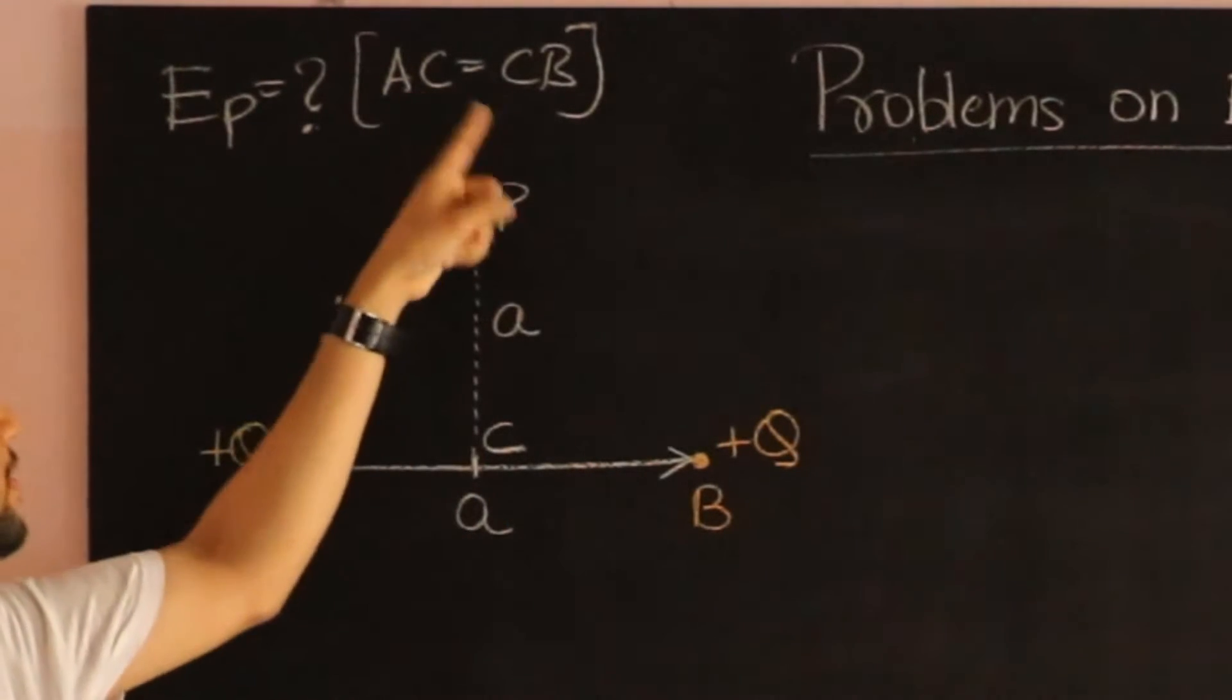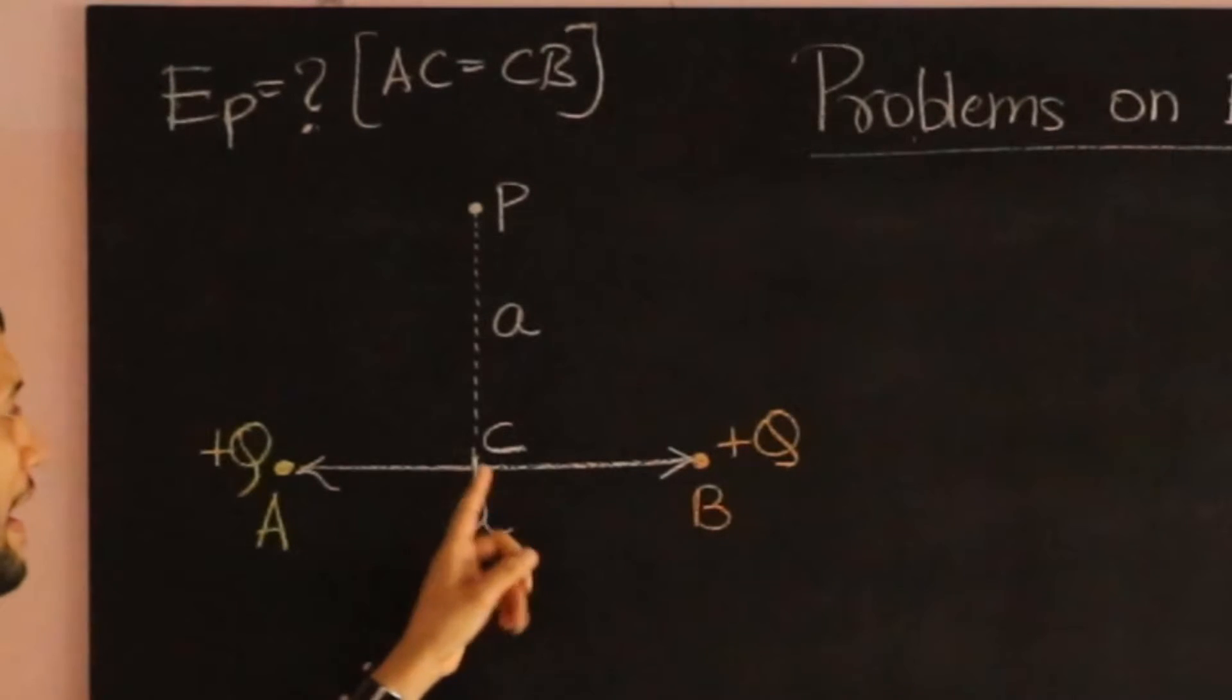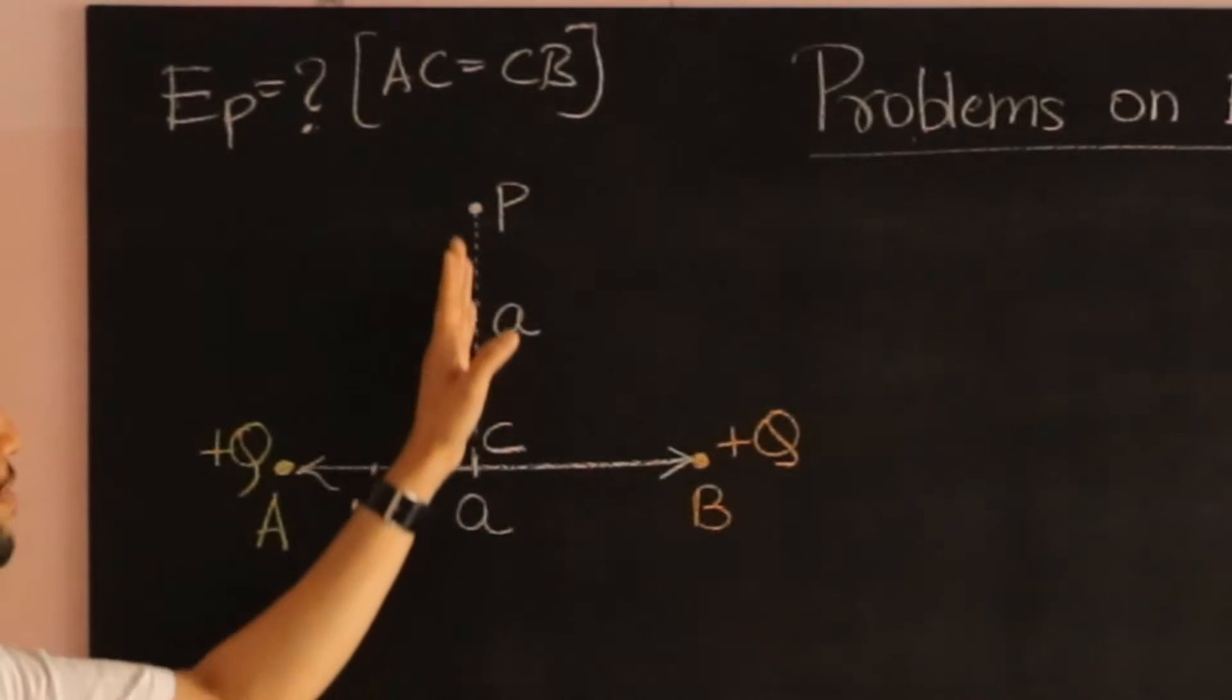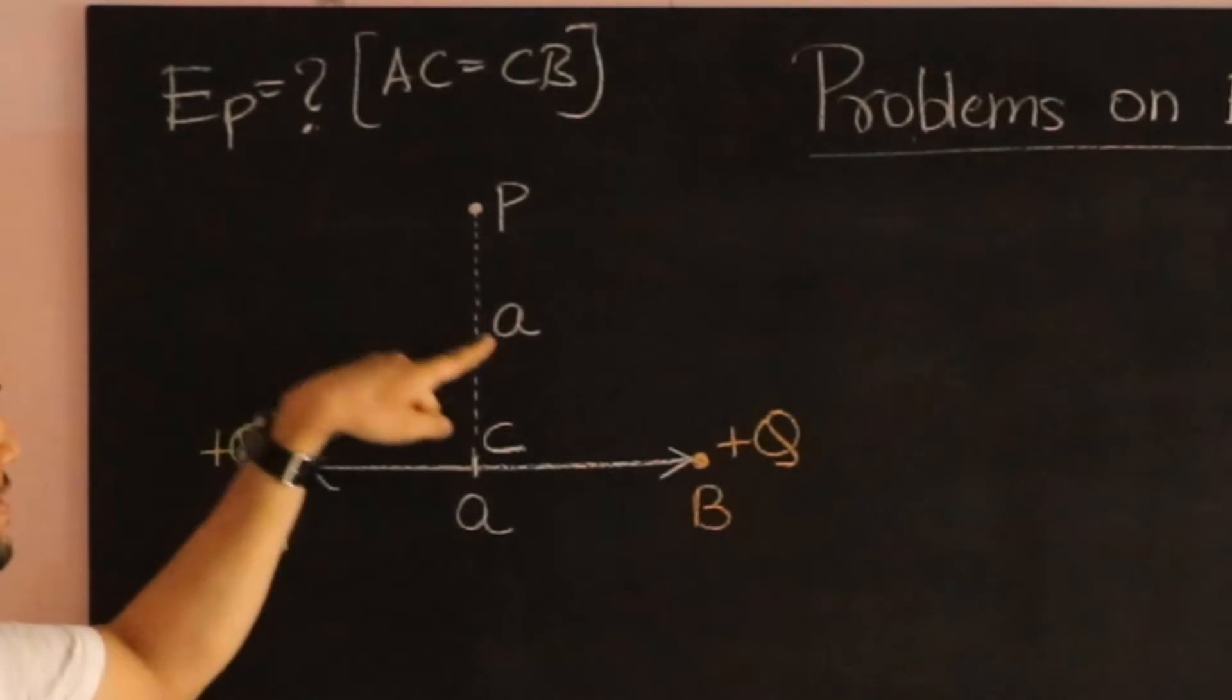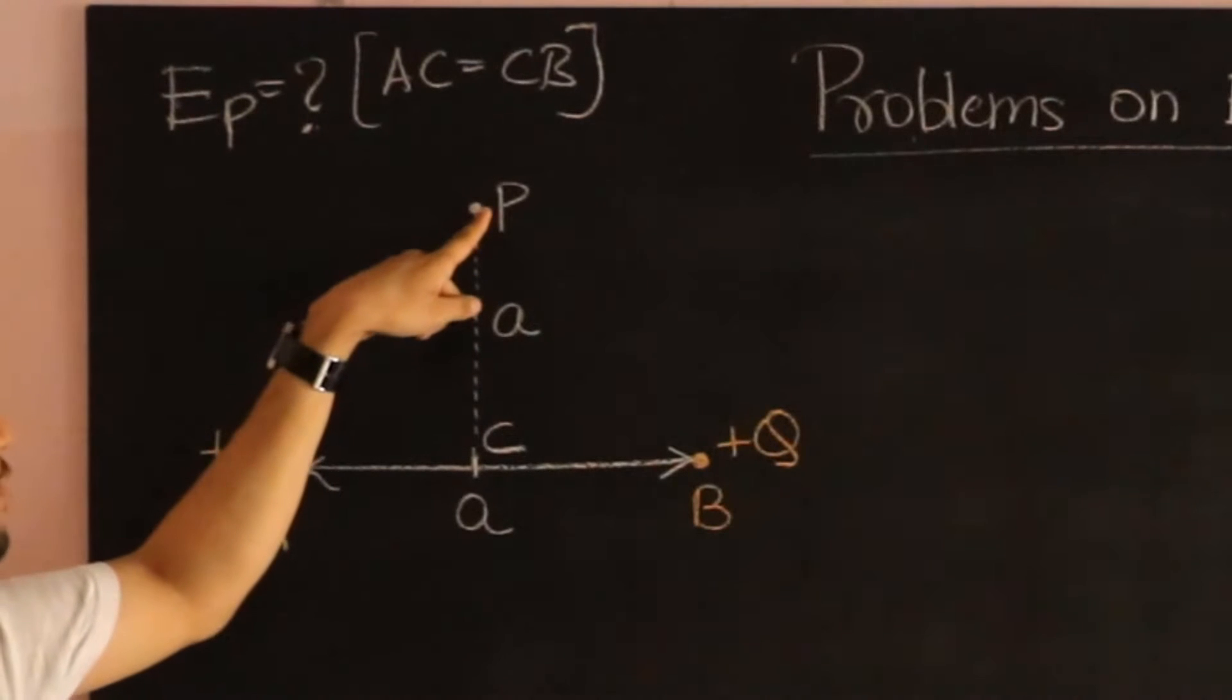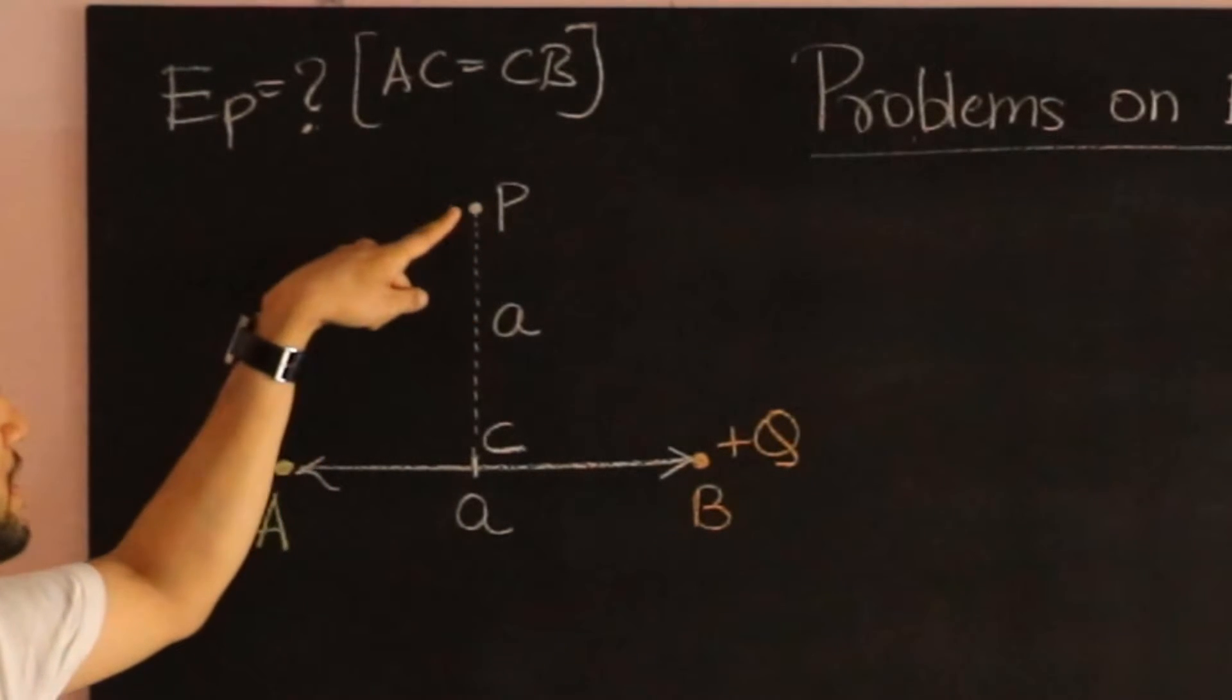Then you have a midpoint C, and we are going on a perpendicular bisector at a distance A, and we need to calculate what the electric field at that point P is.